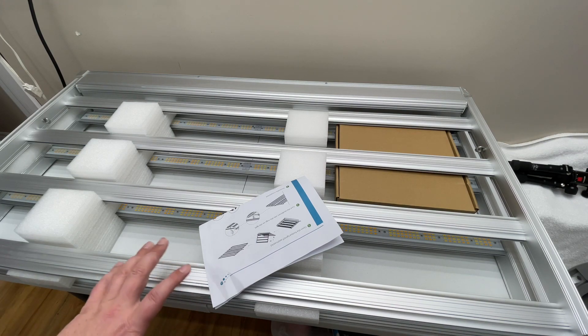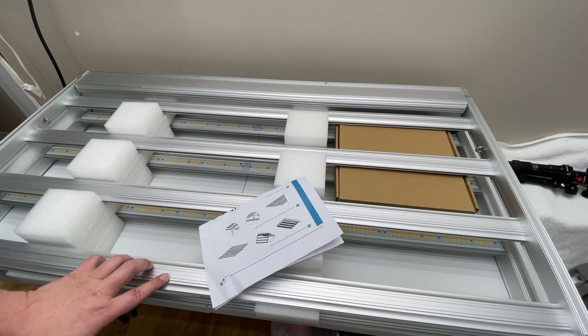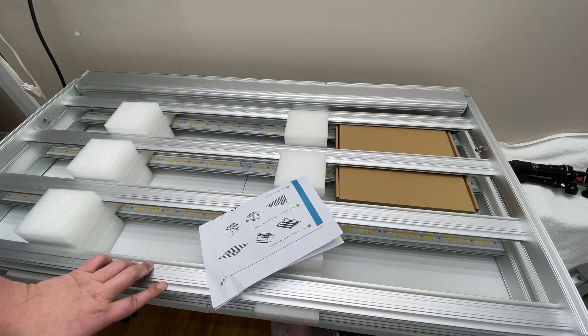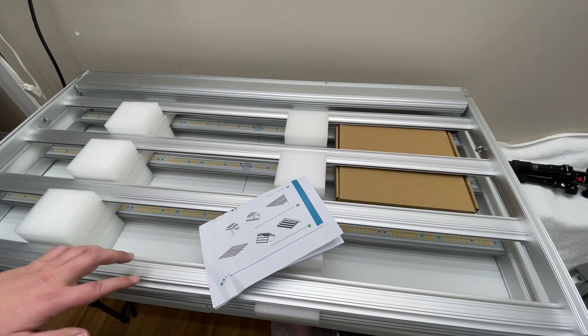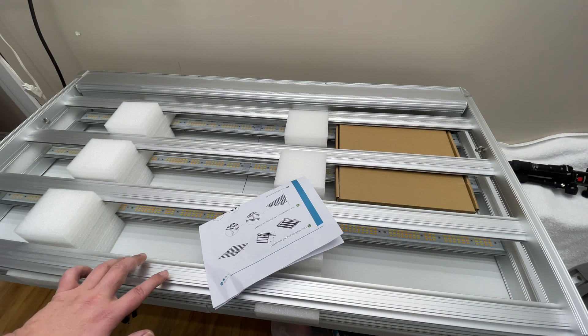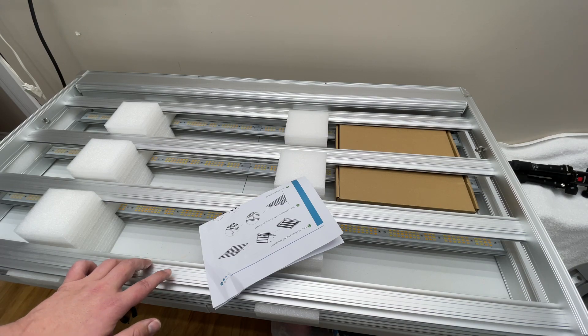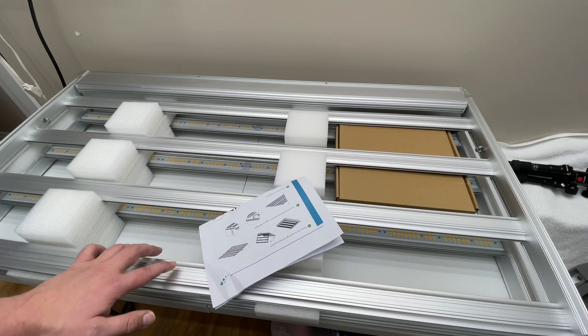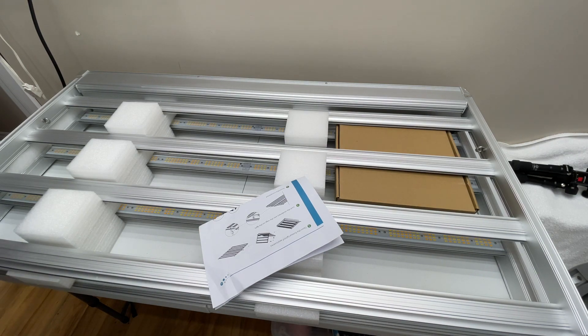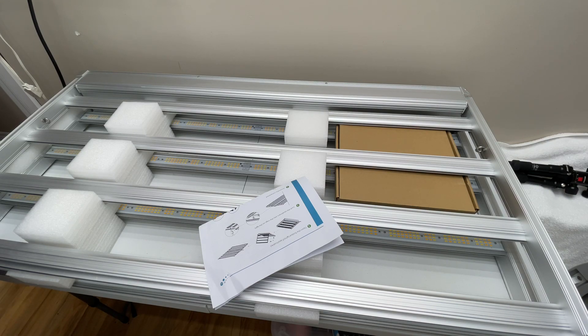But for now, we have this here. This is the Octopus G8 by Hordabest. You can find these in Canada at IndoorGrowingCanada.com, I'll put the link in the description, or you can visit the United States site at Hordabest.com.